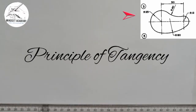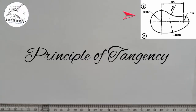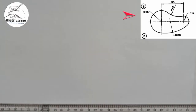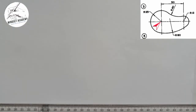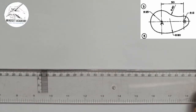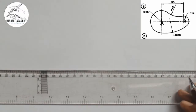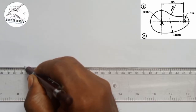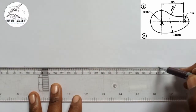Welcome to my channel where we are going to solve this problem involving tangency. We are told to reproduce the figure displayed on the right-hand side of the screen using the principle of tangency. If you look at this figure closely, we have two centers. The first thing you do is take your T-square and draw a horizontal construction line.